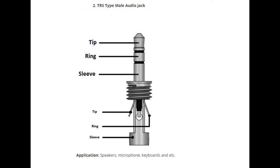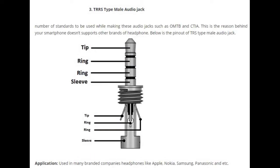The second one is the TRS connector — tip, ring, and sleeve. This is a standard headphone connector used for stereo, giving a stereo effect that supports a stereo microphone or stereo speakers.